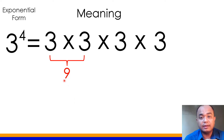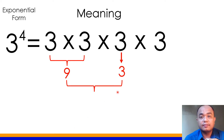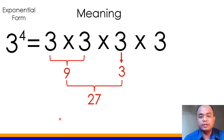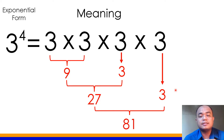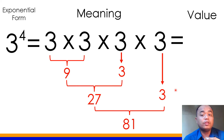So that means 9 times 3. How much is 9 times 3? The answer is 27. Next, the second product we get, which is 27, will be multiplied again to the last factor, which is 3. So 27 times 3 is how much? The answer is 81. So the value of 3 to the 4th power, or 3 to the exponent 4, is 81.